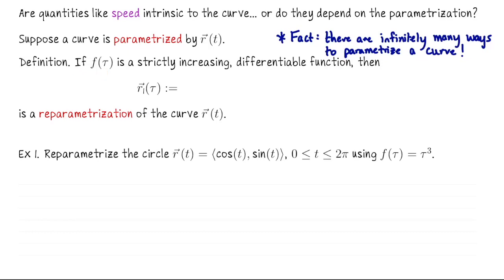To reparametrize, you take your input t and plug in a strictly increasing differentiable function f of tau, where tau is the new input. We plug f of tau into the original parametrization r. Sometimes we denote this new parametrization as r sub 1 of tau, removing the intermediary function f. So we start with r of t and replace t with f of tau to get a new parametrization.